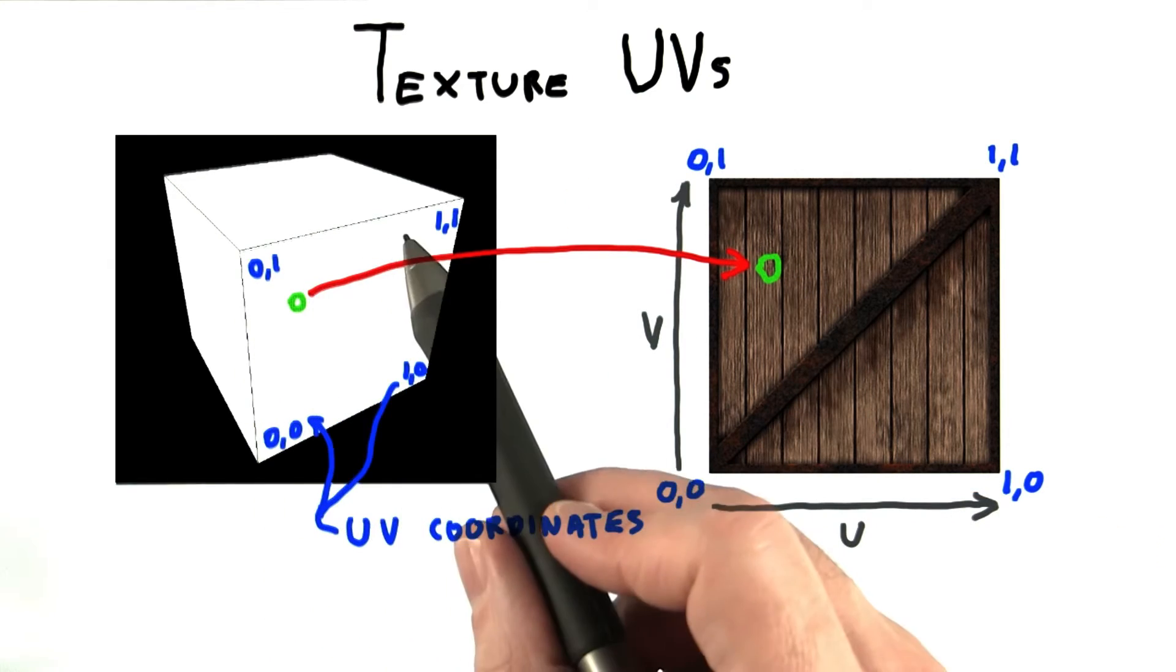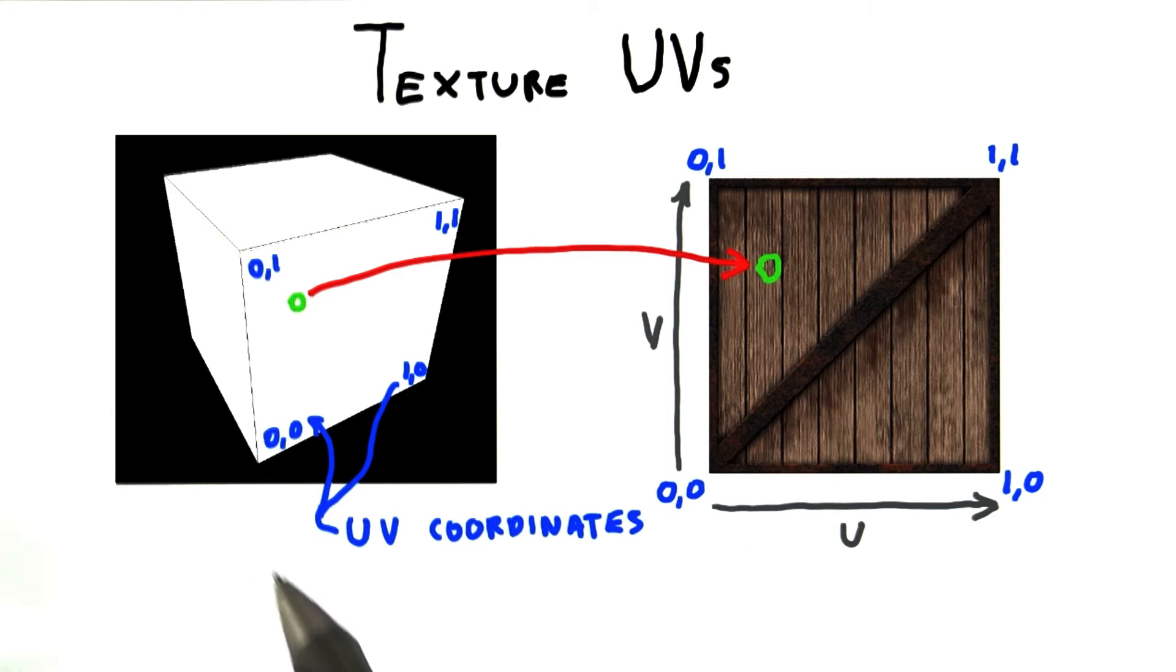This location problem is most commonly solved by adding two values to every vertex. These are called UV coordinates.